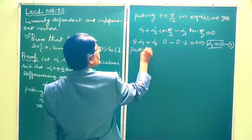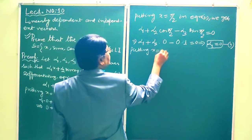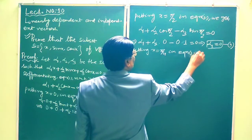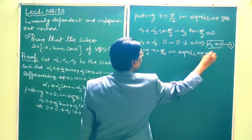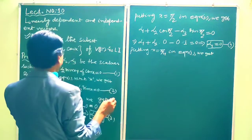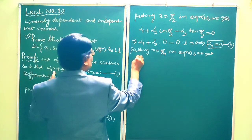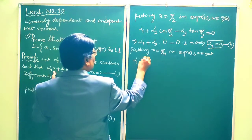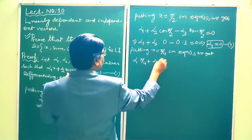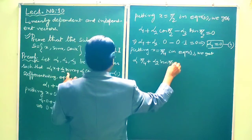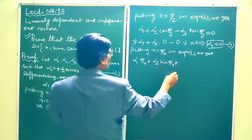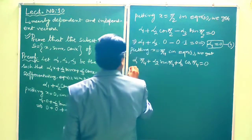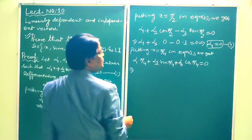Putting x = π/4 in equation 1, we get α1·(π/4) + α2·sin(π/4) + α3·cos(π/4) = 0. Since sin(π/4) = cos(π/4) = 1/√2, this gives α1·(π/4) + α2·(1/√2) + α3·(1/√2) = 0.